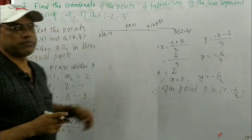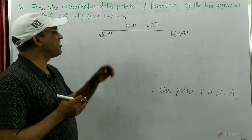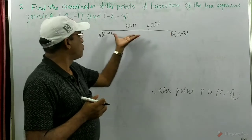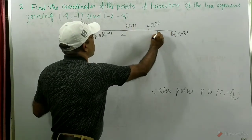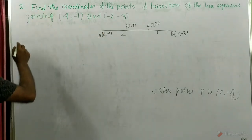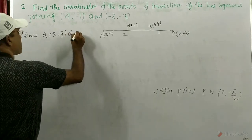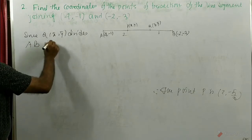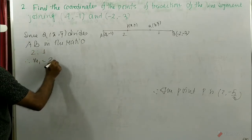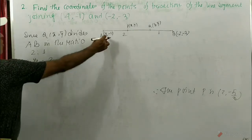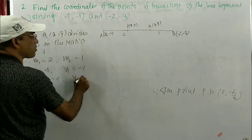We can easily find the value of Q. Since Q(x̄, ȳ) divides AB in the ratio 2 is to 1, therefore m1 = 2, m2 = 1. And x1 = 4, y1 = -1, x2 = -2, y2 = -3. This is x1, y1 and this is x2, y2. Now we are putting the values in the given formula.